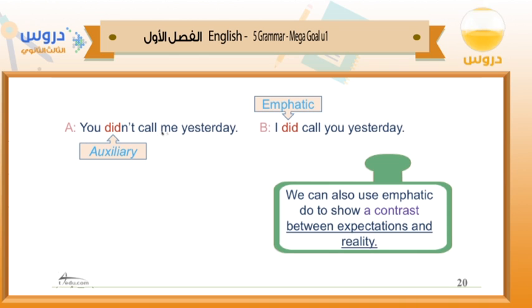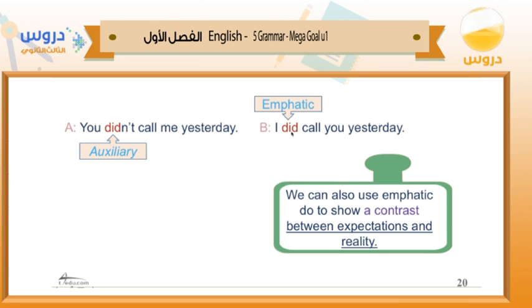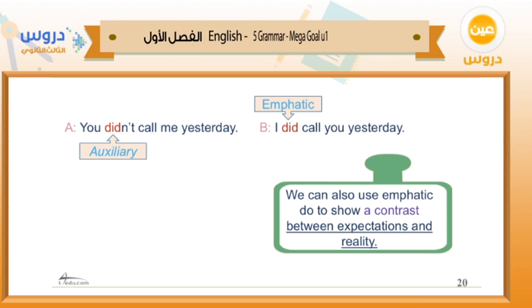Look at this: 'You didn't call me yesterday.' — 'I did call you yesterday.' In the first sentence, 'didn't' is an auxiliary verb used in the negative. But in 'I did call you,' 'did' is added to an affirmative sentence to show emphasis — so we call it emphatic 'do.' We can also use emphatic do to show a contrast between expectations and reality. For example: 'You didn't write your homework.' — 'Of course I did write my homework.' Here I show the contrast — the opposite of your claim.